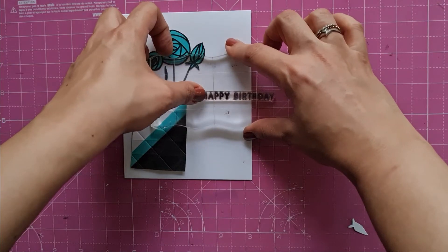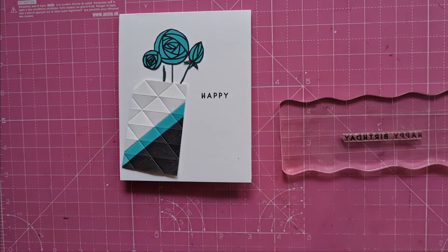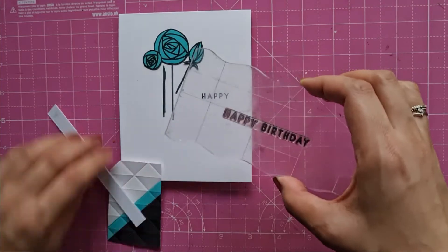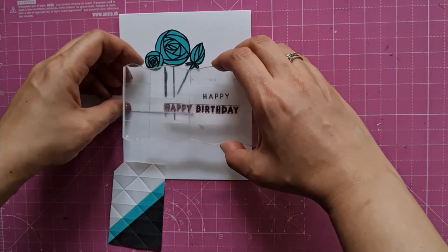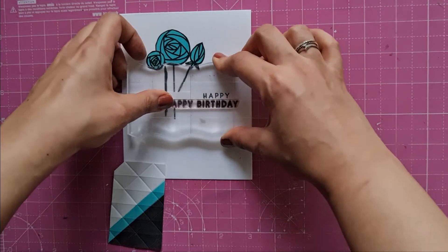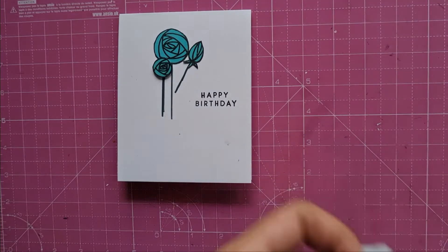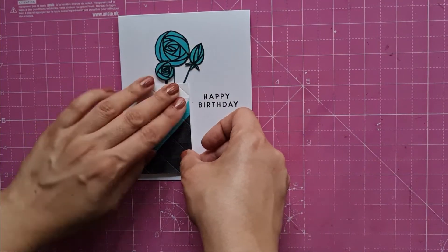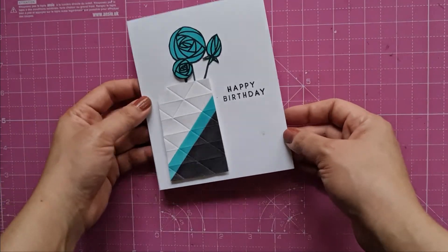To complete the card, I use Happy Birthday, which again is from another stamp set. I am sure you will excuse me for this too. I stamp it with black ink, adhere my vase with 3D foam tape, and here is a modern card with a color-blocked vase and some unconventional flowers.